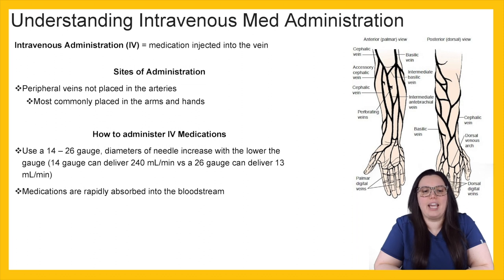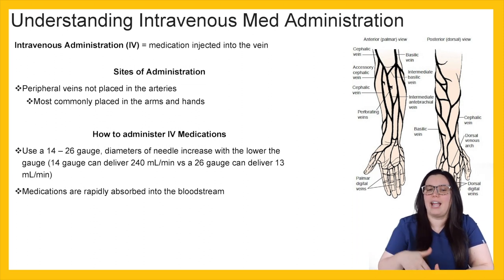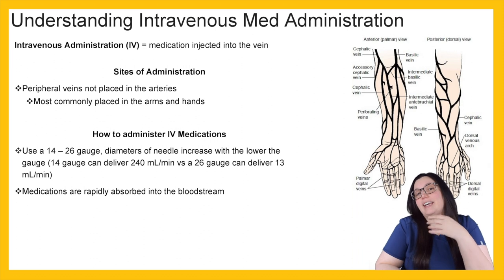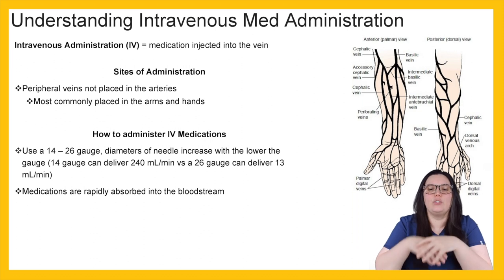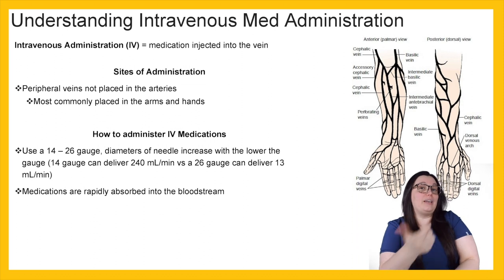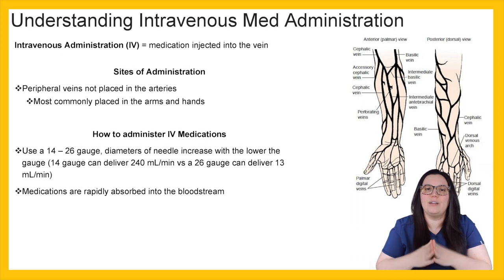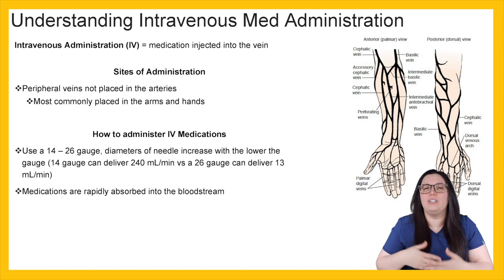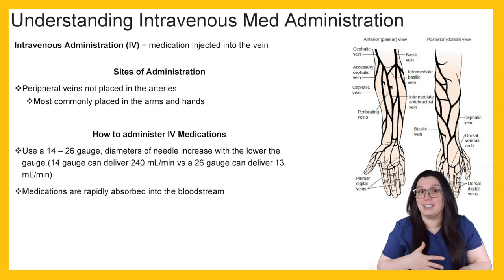So how do we administer IV medications? We want to use a 14 to 26 gauge IV. The diameters of needles increase with the lower the gauge. A 14 gauge is going to deliver 240 mls per minute, whereas a 26 gauge is only going to deliver 13 mls per minute. That's why it's so important when doing blood administration for hemorrhaging patients — we definitely want to make sure we have those gauges that allow us to push more in. We'd most likely be looking at a 20, 18, or maybe 16 gauge.